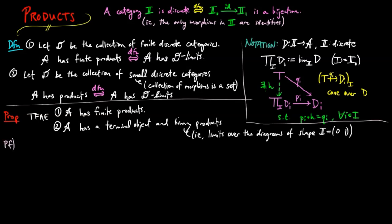For the proof, one implies two a fortiori, since the terminal object is the empty product and binary products are limits of a finite discrete category.